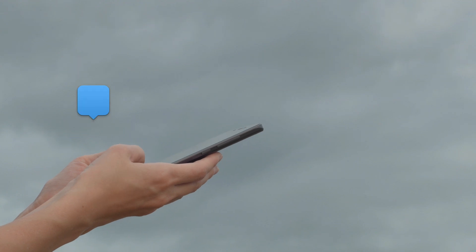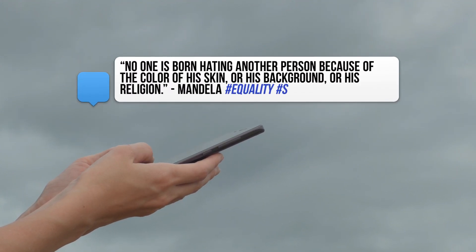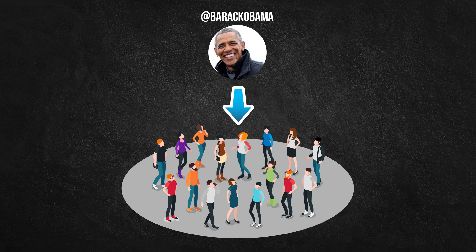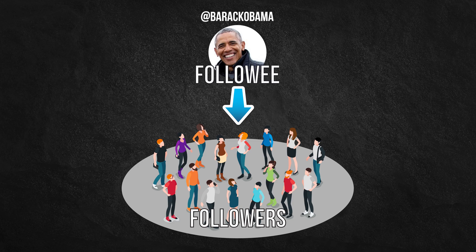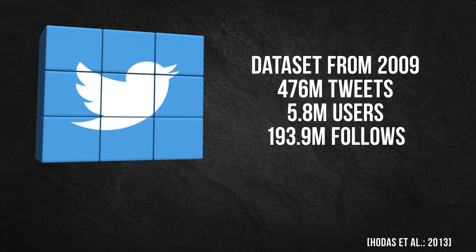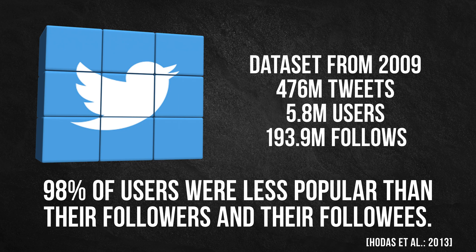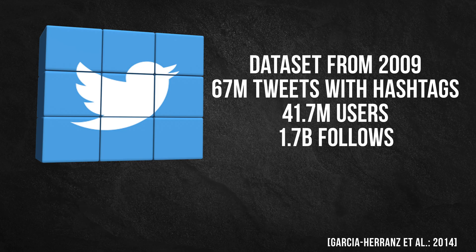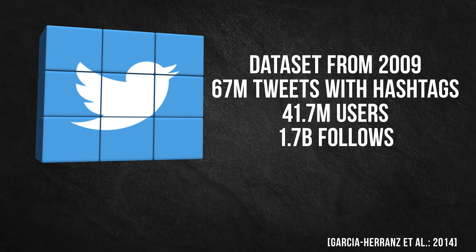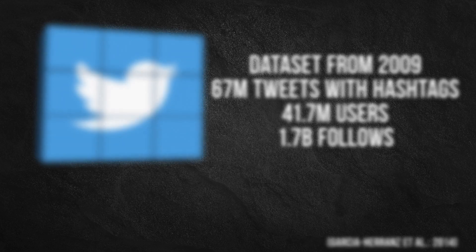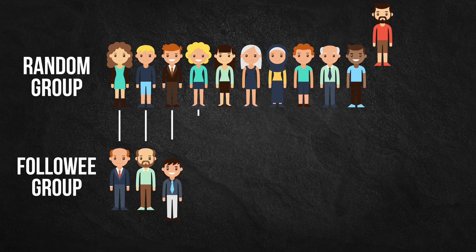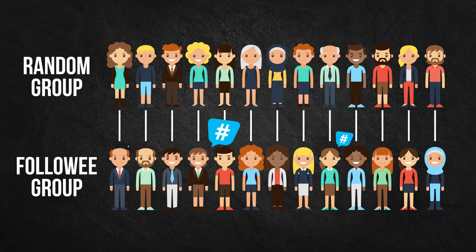Now let's look at Twitter — a microblogging service where users post short messages, often with keywords marked by a hashtag to help them appear in searches. Unlike Facebook, Twitter relations are directional: when you follow someone, information flows one way — you get updates on their tweets but not vice versa. You are the follower; they are the followee. In 2013, researchers studied a large portion of global Twitter activity from 2009 and found that 98% of users were less popular than their followers and followees.